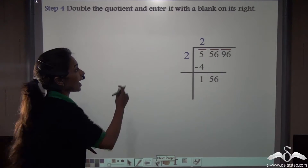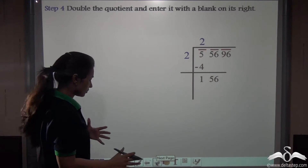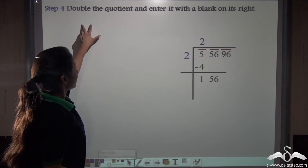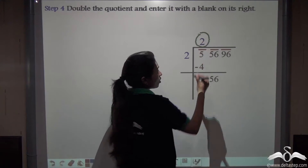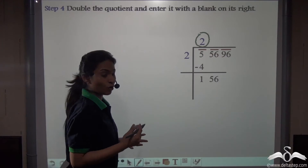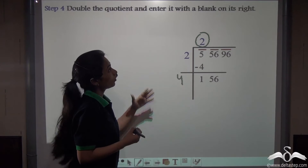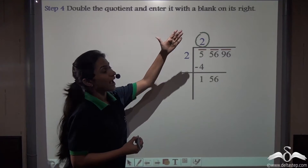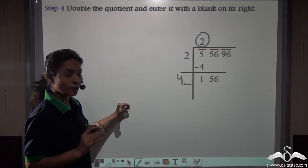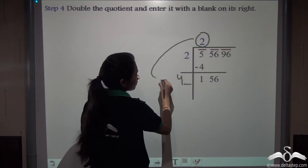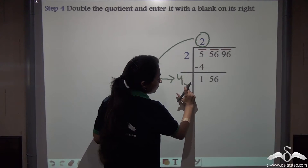Next, double the quotient and enter it with a blank on its right. The current quotient is 2, so doubling it gives 4. We write 4 here and place a blank to its right. So we have doubled the quotient and placed a blank for the next digit.